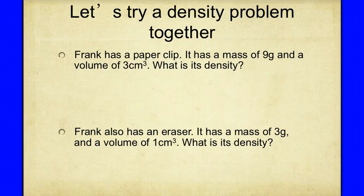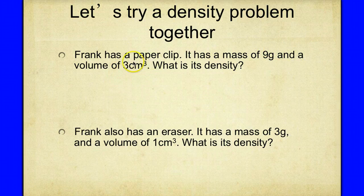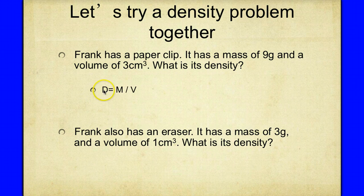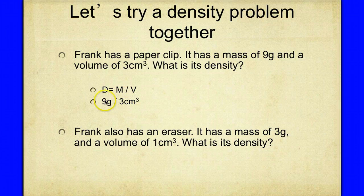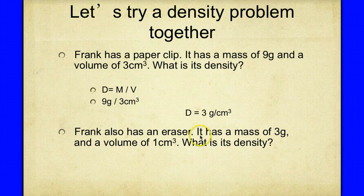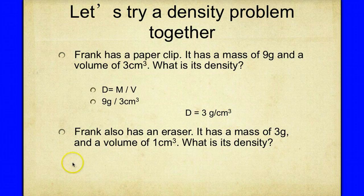Let's try a density problem. Frank has a paperclip with a mass of 9 grams and a volume of 3 centimeters cubed. What is the density? First, write the formula: density equals mass divided by volume. Then substitute: 9 grams divided by 3 centimeters cubed. Nine divided by three gives us 3, and our units are grams per centimeter cubed. So the density is 3 grams per centimeter cubed.